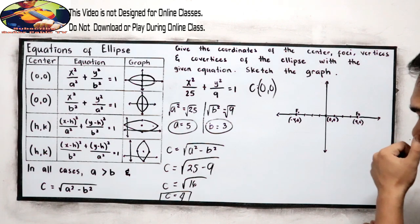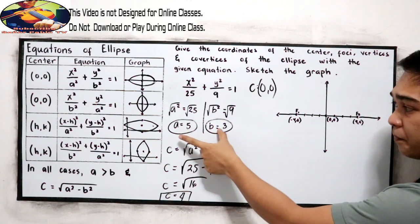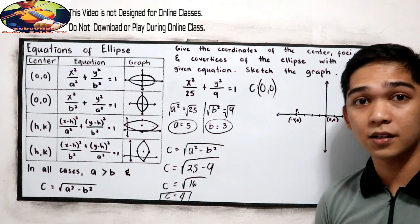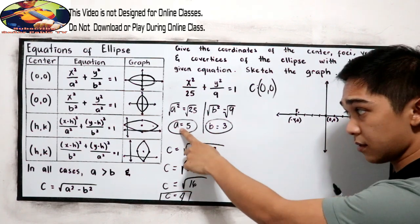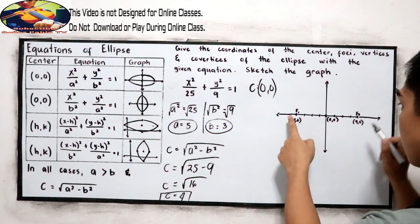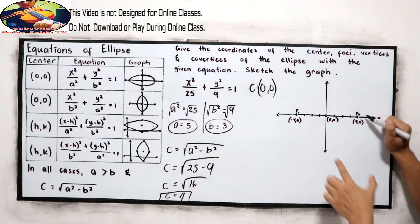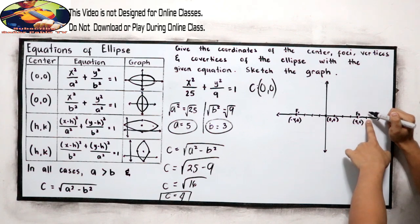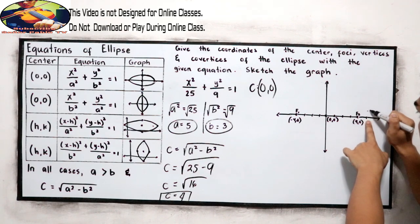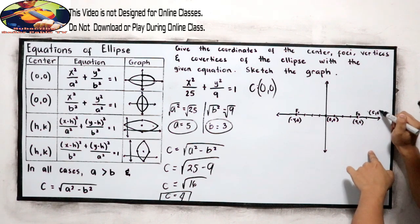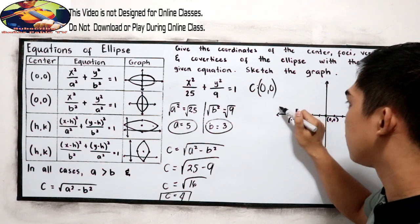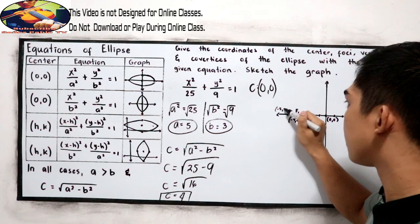Now, we have A and B. The distance of the semi-major axis from the center is A units. So going 5 units along the x-axis, our vertex will be at (5, 0), and the other vertex is at (-5, 0).